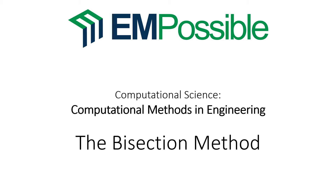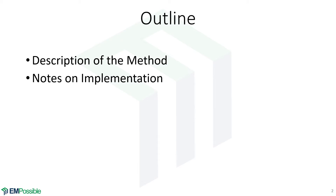The bisection method. This is the most robust, but probably least efficient of the root finding methods. We will start by just describing the method with illustrations and end with some notes on how to implement it.